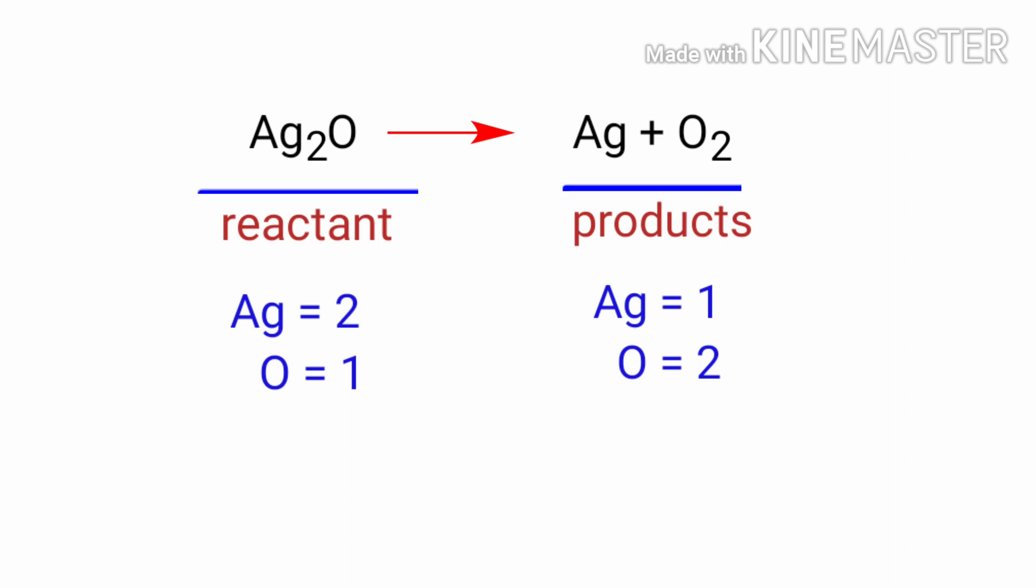If you look at this equation, the equation is not balanced. In the reactant side, there are two silver atoms and one oxygen atom present. And on the product side, there are one silver atom and two oxygen atoms present.